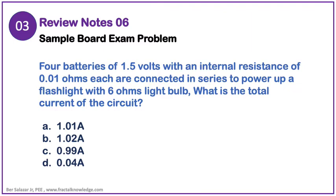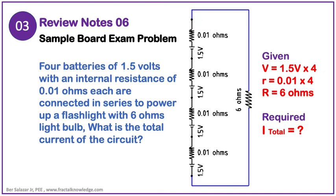Our third problem involves a series of batteries with internal resistances connected to a 6 ohm light bulb, and it reads like this: Four batteries of 1.5V with internal resistances of 0.01 ohms each are connected in series to power up a light with a 6 ohm light bulb. What is the total current of the circuit? The problem looks like what was presented in the circuit on your screen. For batteries connected in series, the total voltage is additive, so it is equivalent to 6V.